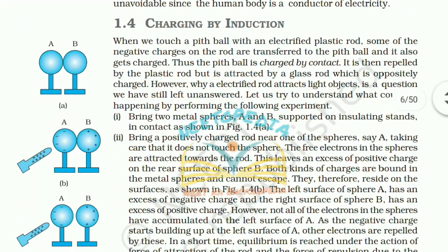1.4 Charging by Induction. When we touch a pit ball with an electrified plastic rod, some of the negative charges in the rod are transferred to the pit ball and it also gets charged — this is charging by contact. It is then repelled by the plastic rod but attracted by the glass rod which is oppositely charged. However, why an electrified rod attracts light objects is a question we still have left unanswered.